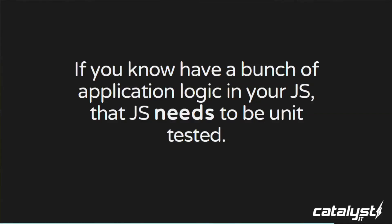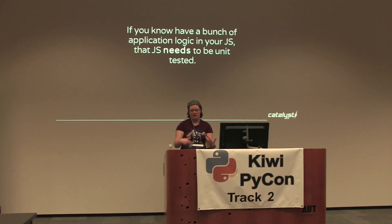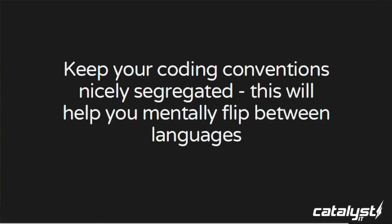Another big one: if you're putting application logic in your JavaScript, test that stuff. Just because it used to be lightweight JavaScript for making buttons go red doesn't mean application logic doesn't need testing. Look at Jasmine as a unit testing framework for JavaScript, and you can use Selenium to integrate that with the rest of your tests — it has a web-based test runner. Also, if you're going back and forth between Python and JavaScript, try to stick to the conventions of each language, and use linters to make sure you're keeping up with those conventions.